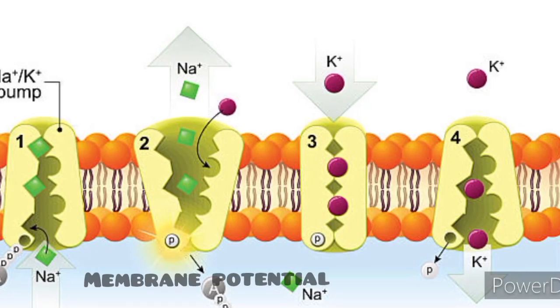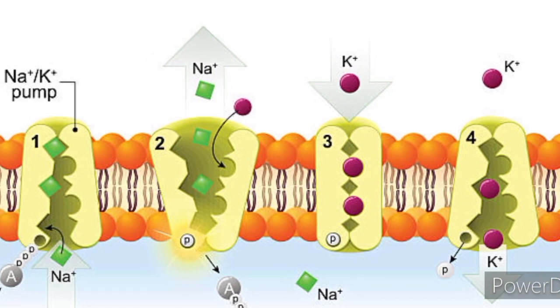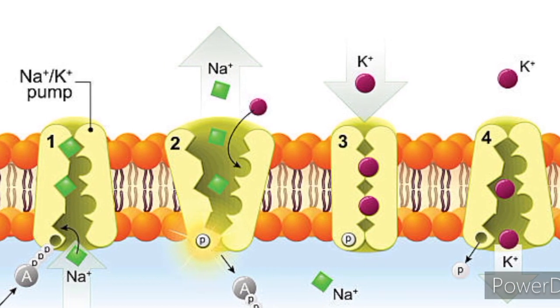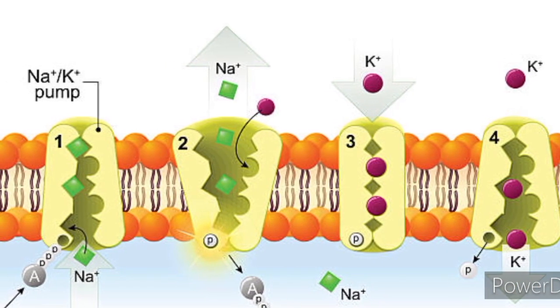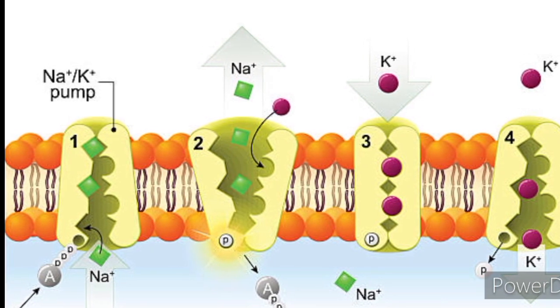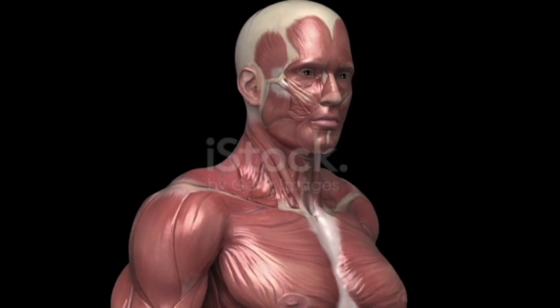Membrane potential: Cells maintain an electrical potential across the membrane, known as the membrane potential, generated by differences in ion concentrations between the interior and exterior of the cell. This potential is vital for nerve impulses, muscle contraction, and various cellular processes.